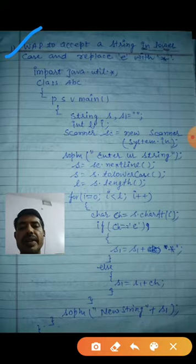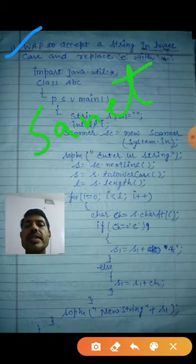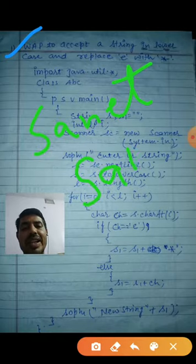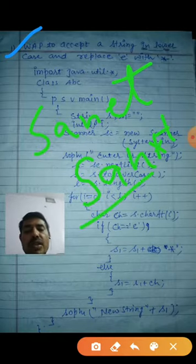Suppose any string is given here. Suppose s-a-n-e-t, something is given. Then what will you write here? You will write it s-a-n-star-t. This one I want. How can you solve this question?